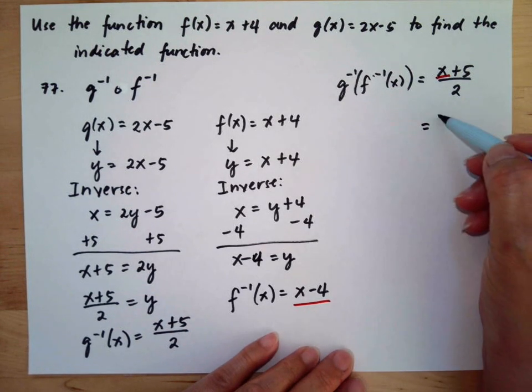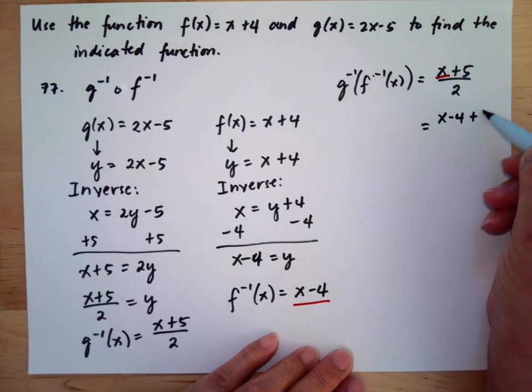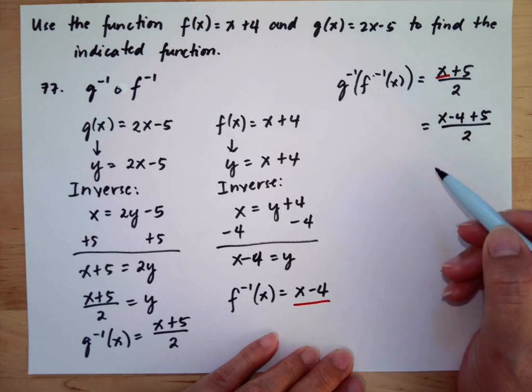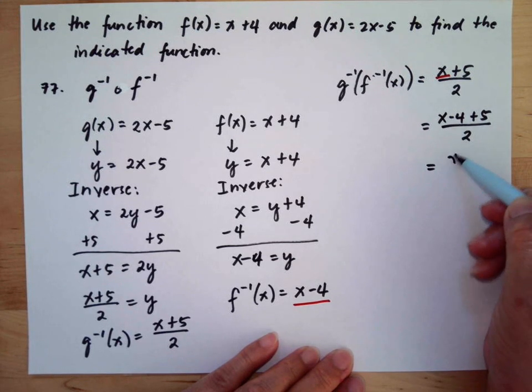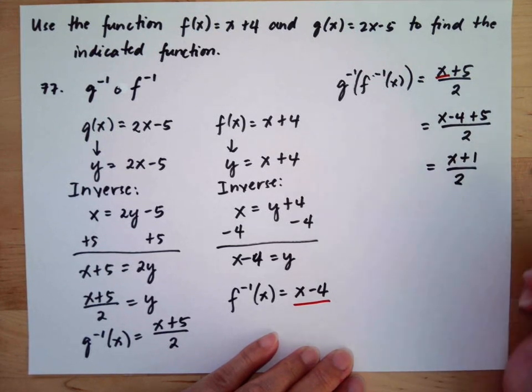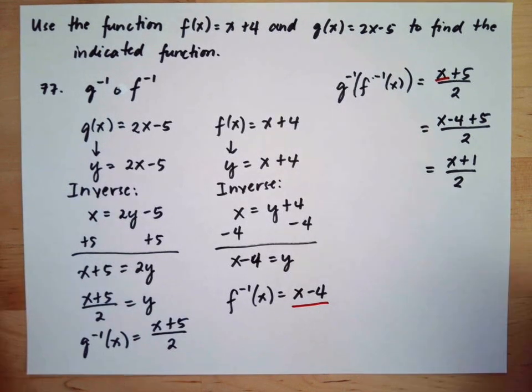So this would be (x - 4 + 5)/2, which simplifies to (x + 1)/2. This is our answer for this problem.